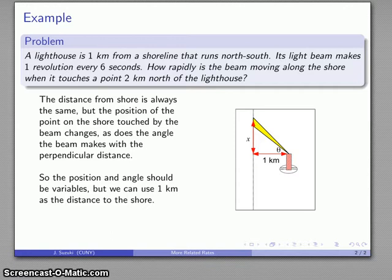The identification of these variables is important because we are given some information here that looks like it might be a constant. I'm interested in a point two kilometers north of the lighthouse, and it's important for setting this problem up to recognize that the position of the beam on the shoreline is a variable even though we're interested when it happens to have a value equal to two kilometers.